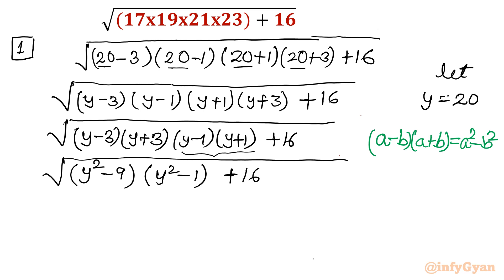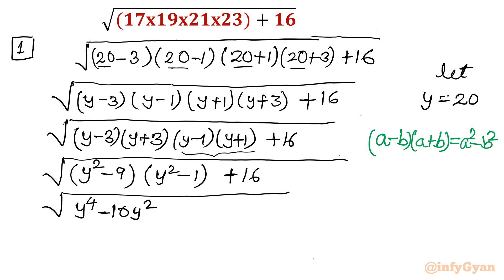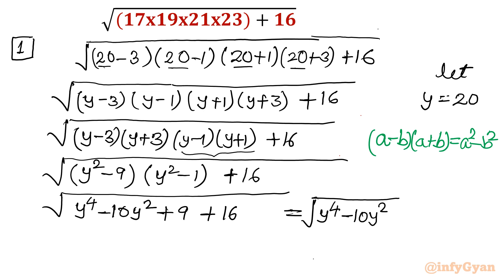Now take the product of (y squared minus 9) and (y squared minus 1). Expanding: y squared times y squared gives y to the power 4; y squared times negative 1 gives negative y squared; negative 9 times y squared gives negative 9y squared; and negative 9 times negative 1 gives plus 9. Overall: y to the power 4 minus 10y squared plus 9, plus 16, which gives us y to the power 4 minus 10y squared plus 25.